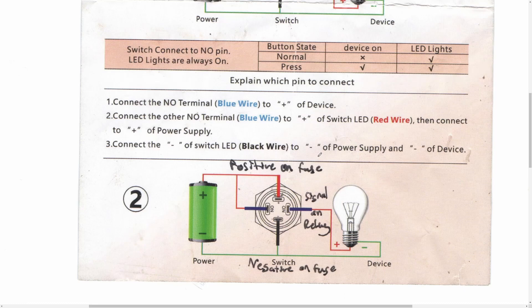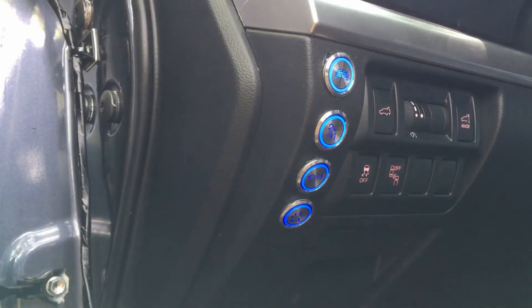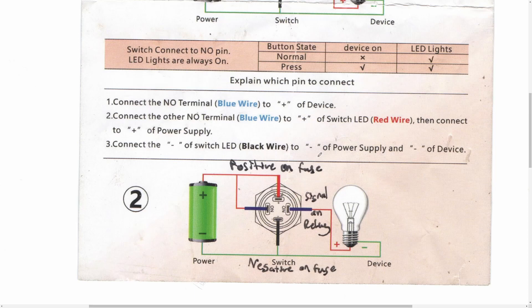The next way that we can wire up these switches is that the LED light is always on regardless of if the device is on or not. If there is power going to the switch, the LED light is on on the switch. This is the way I've chosen to wire my switches up.